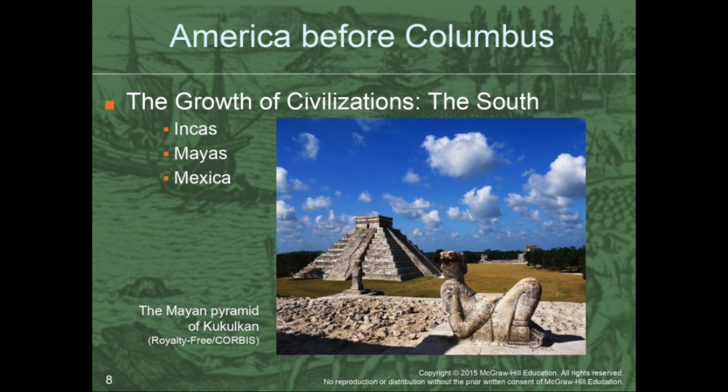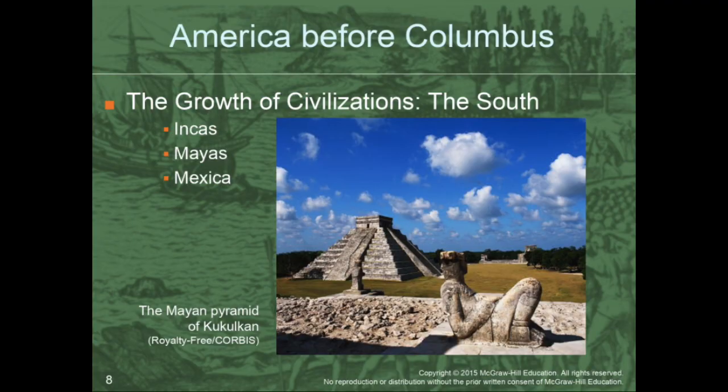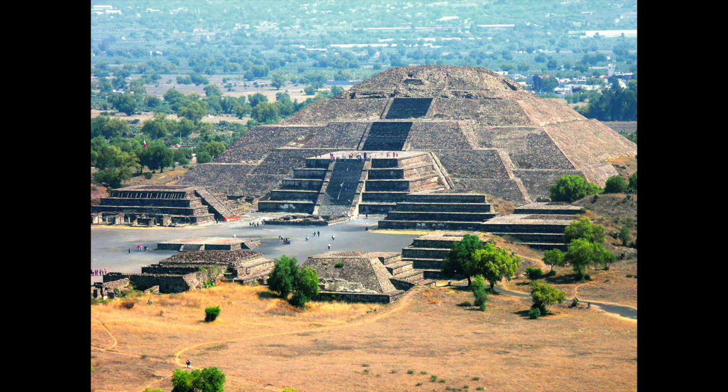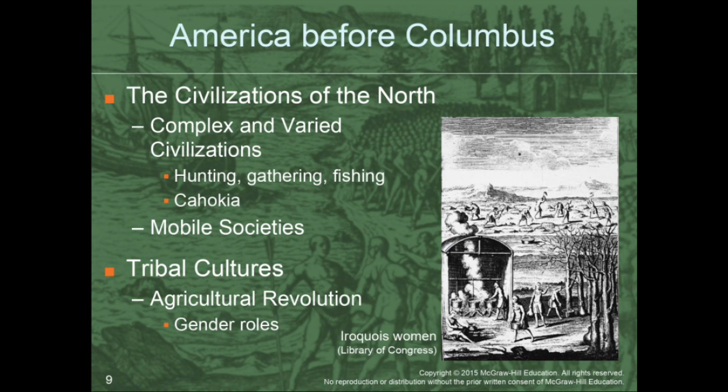Civilizations grew before Columbus arrived. We see big, settled, agriculturally-based societies in the Incas, the Mayas, and the Mexica — you probably know the Mexica as the Aztecs. Here you see an image of a Mayan pyramid, a very common artifact from Central American civilized societies. The Mexica also made pyramids, and you can still see many of those around Mexico City. Whereas the civilizations in the north were not quite as settled as those in Central America, they were still very complex and had a lot of variants between them.